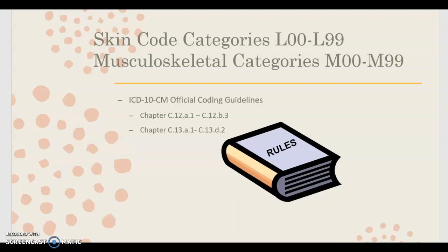As we've learned, the coding manual is broken down into chapters. Coding the skin is from chapter 12 and covers categories L00 to L99. Coding musculoskeletal conditions is from chapter 13, categories M00 to M99. So any codes for skin or subcutaneous conditions will start with an L, and any codes for musculoskeletal diseases or conditions will start with an M.